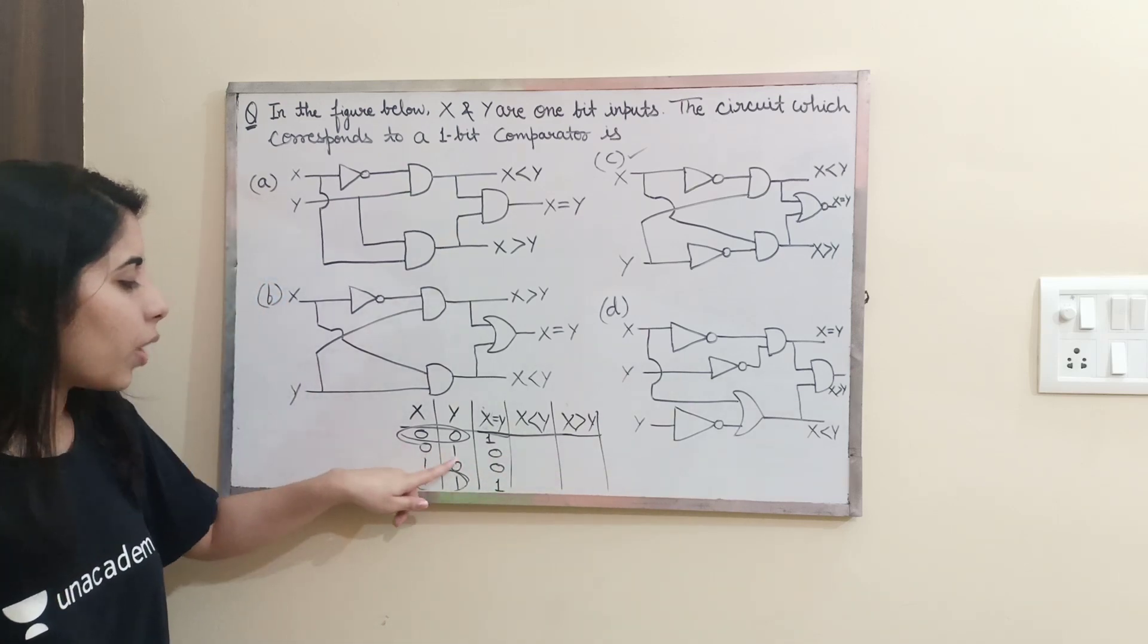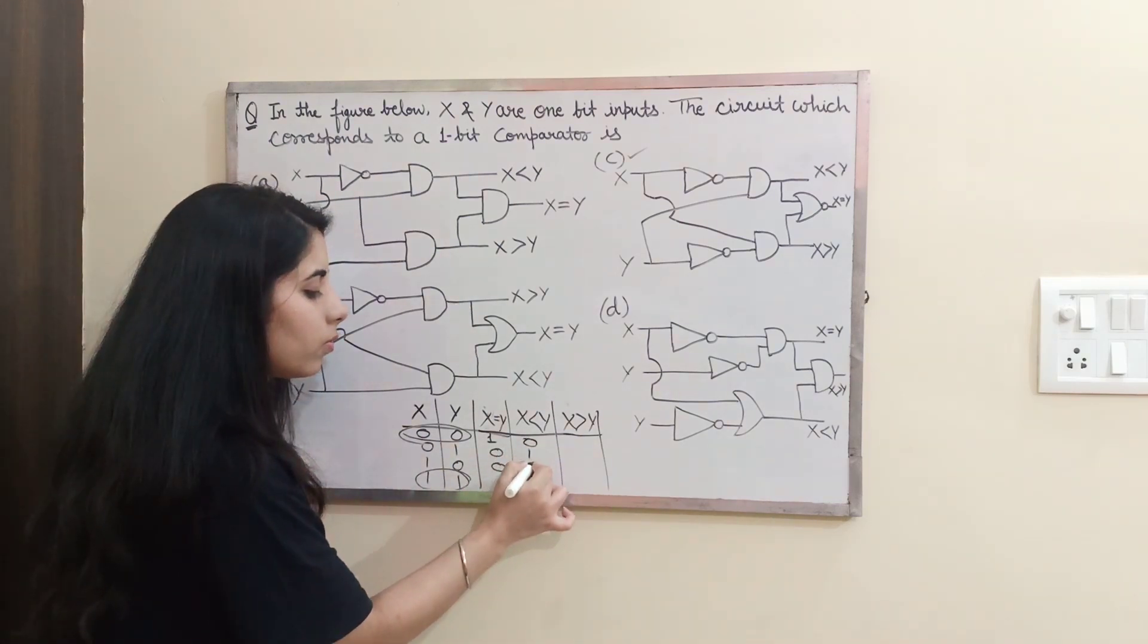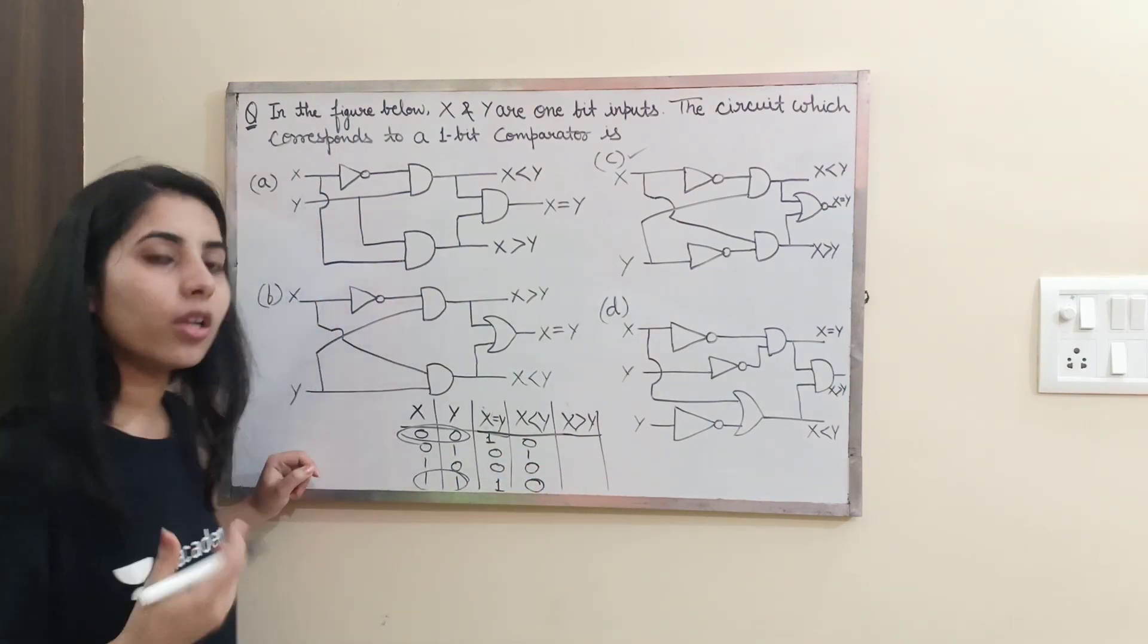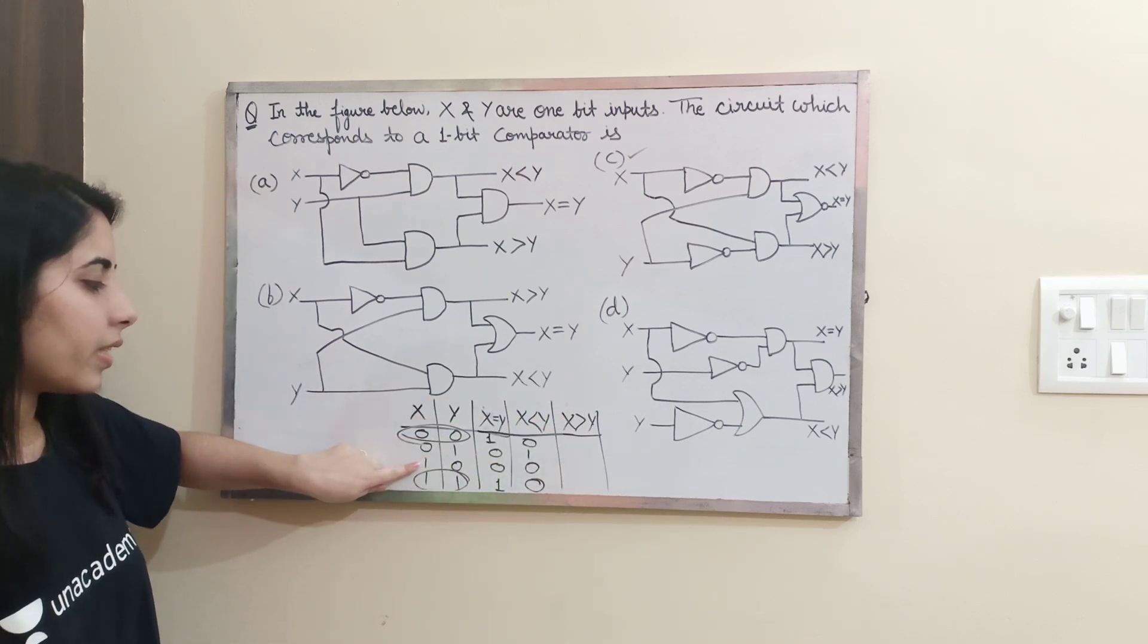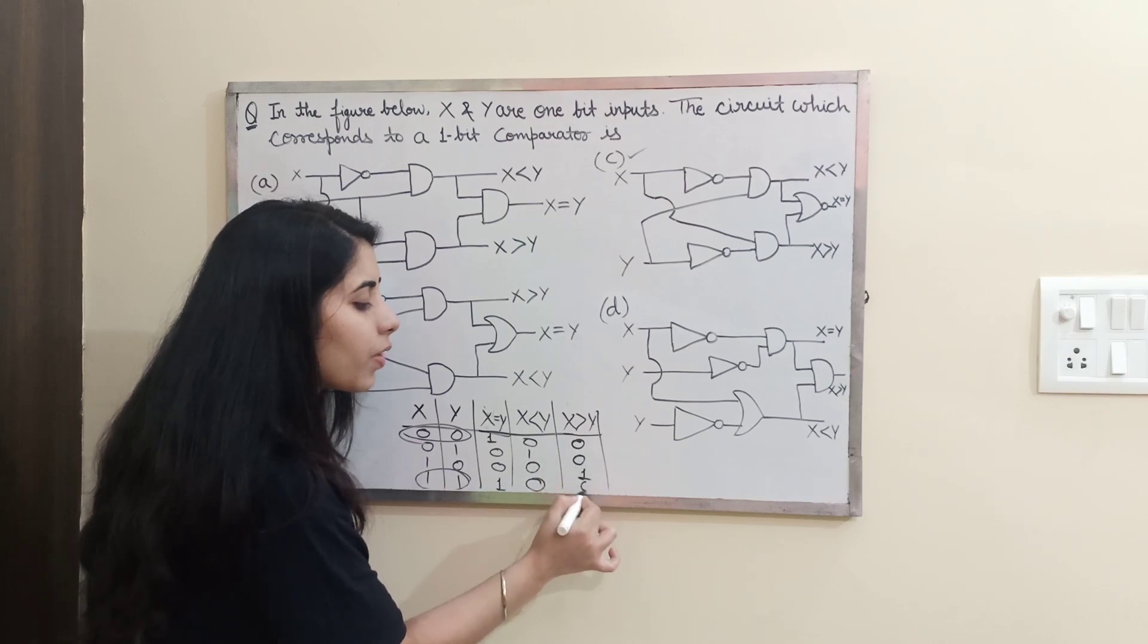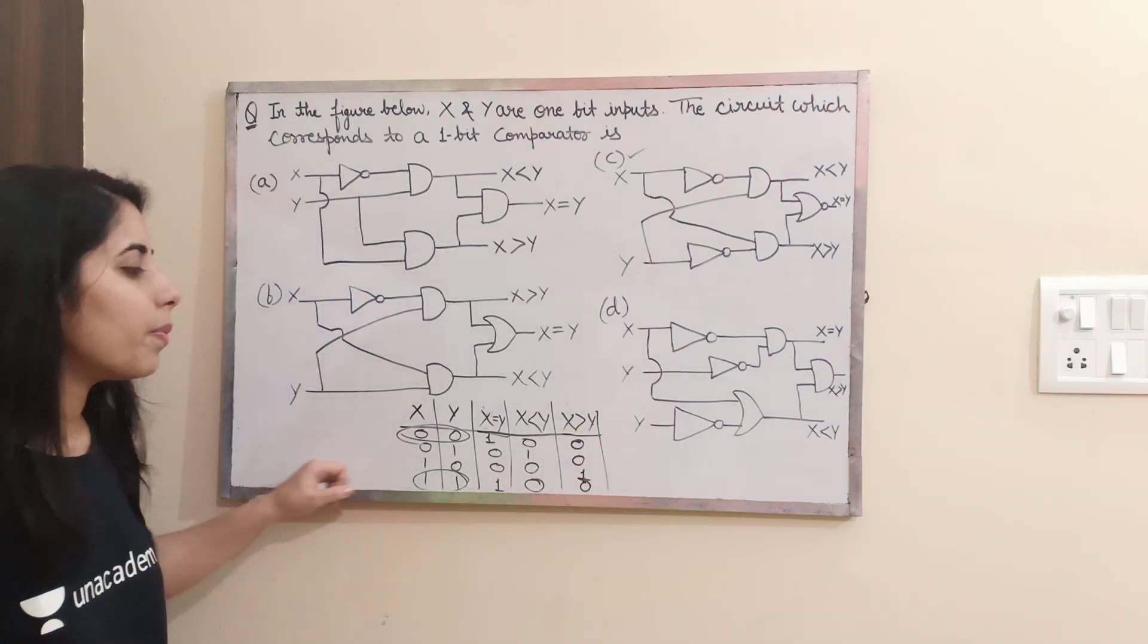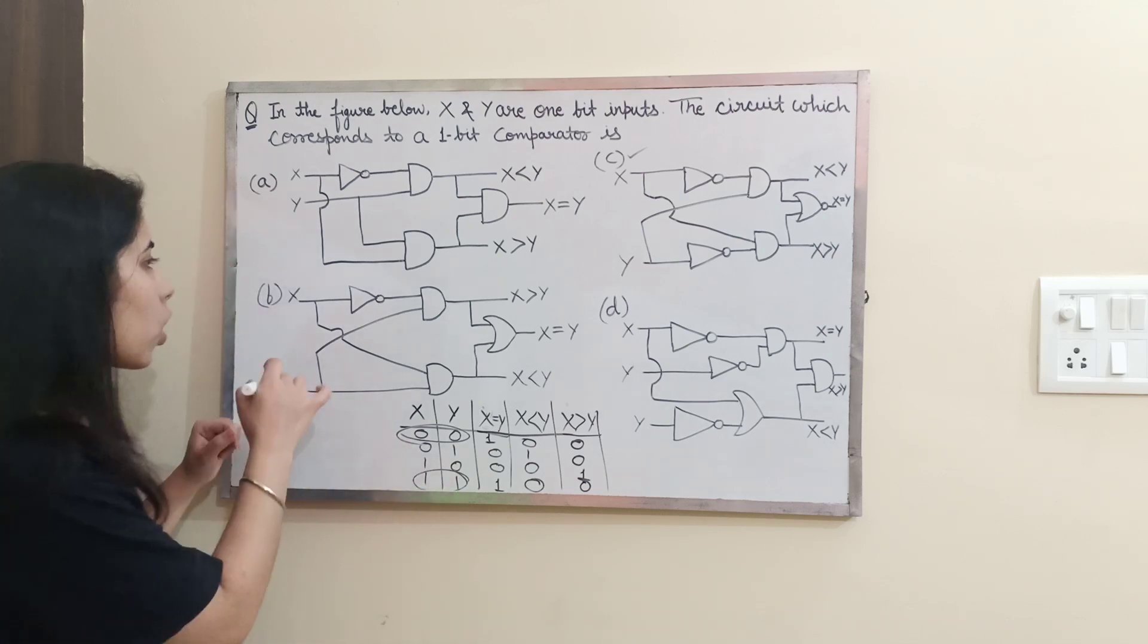Next, X less than Y. So 0 and 1, X is less than Y, so this will be high and others will be low. Then X greater than Y. So this condition is there, the third one, and this is going to be high because that is satisfying this condition. And others will be 0, 0, 0.